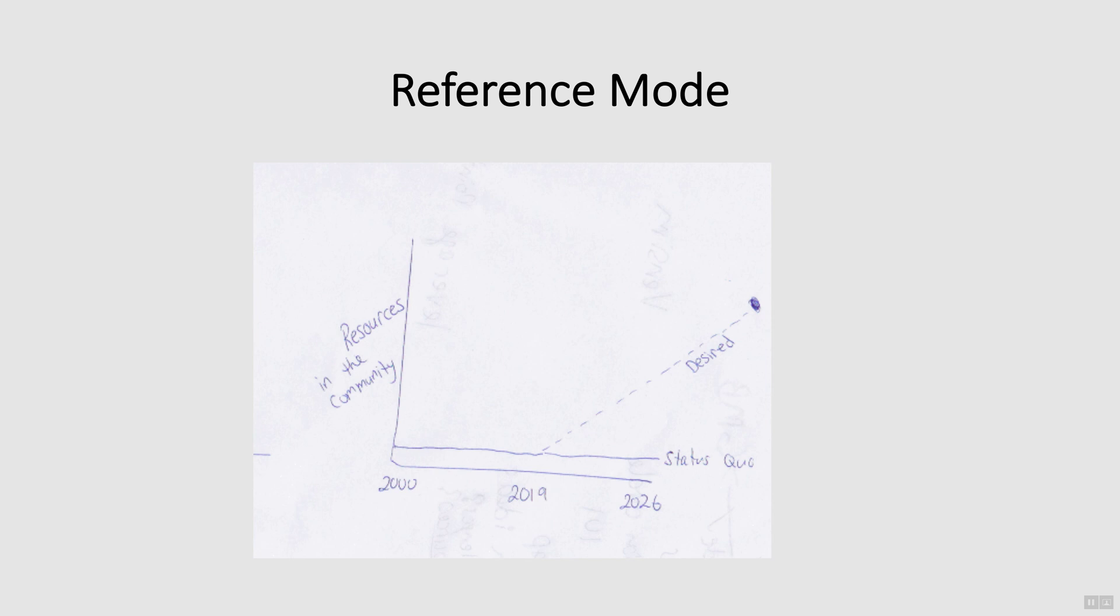As always, time is on the horizontal axis. And she had the resources on the vertical axis. She mapped resources as being steady and low over a period of time and illustrated the desired change to this pattern as increasing the resources. A reference mode can illustrate either a change in an undesirable pattern, such as the low immunisation rate, or a change from the status quo, as in this example of low resources.